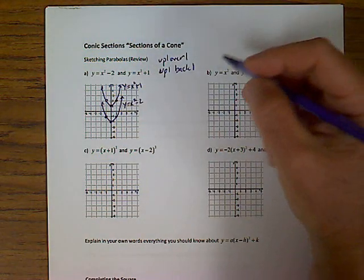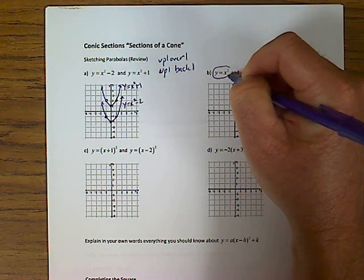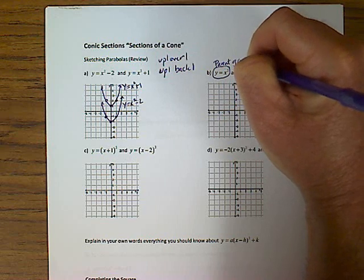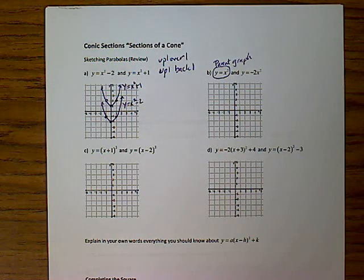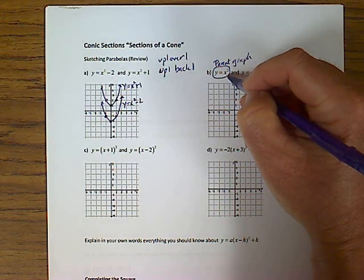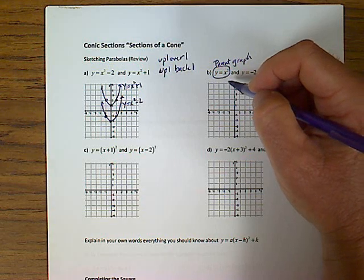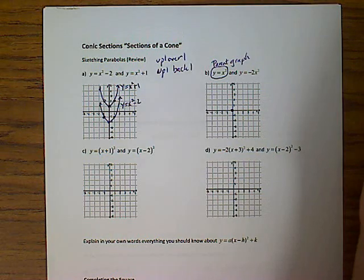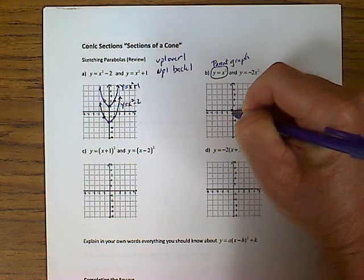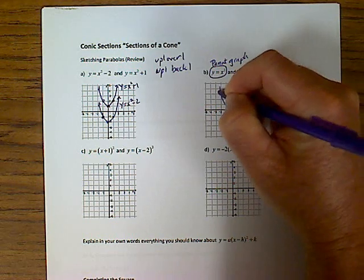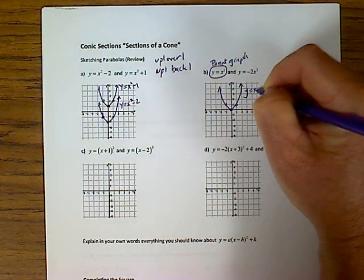For letter B, I want to reemphasize from first semester: y equals x squared is your parent graph. Every other graph comes from that. There is no right, left, up, down, no reflection, no stretch — we just start at (0, 0). Go up 1, over 1, up 1, back 1, and there is your y equals x squared graph. Now for negative 2x squared, this negative 2 is going to do two things: reflect across the x-axis and produce a vertical stretch factor of 2.